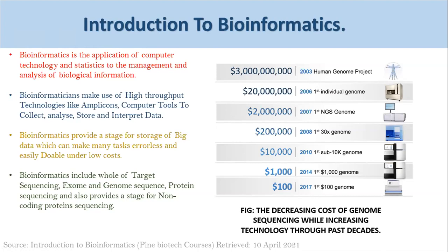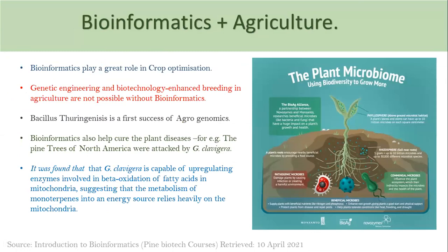As we delve into the convergence of bioinformatics and agriculture, bioinformatics helps enhance the branch of plant genomics, which is agriculture. One of the most important roles bioinformatics plays is in crop optimization — enhancing the way a crop grows, adapts to its environment, and handles environmental resistance, drought capacity, and so on. Bioinformatics is playing a very major role in enhancing crop optimization.